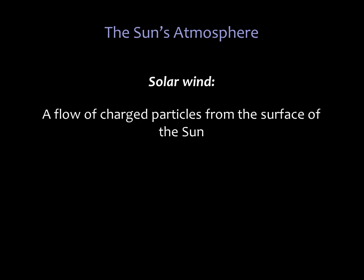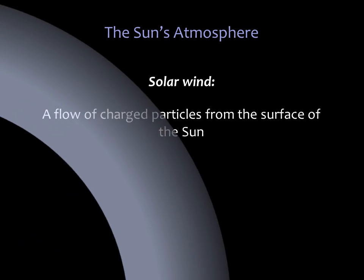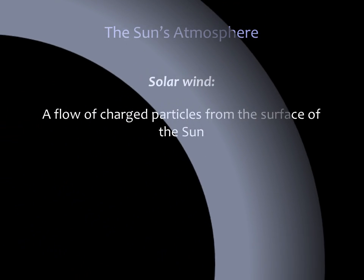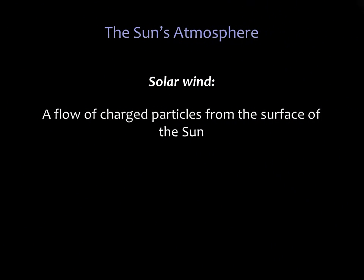Starting with the outermost layer and working our way in, first we have the solar wind. This is the stream of charged particles — mostly protons and electrons — that are continually being blown outward from the sun.